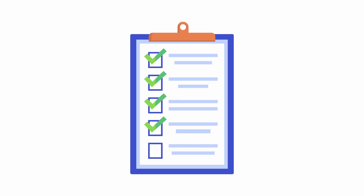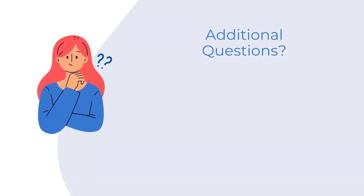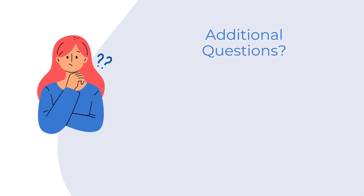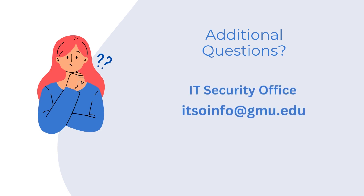Many university applications have already been reviewed and approved to store protected data. If you are unsure about whether an application, service, or system is approved for storing protected data, always seek clarification and request approval when necessary. It's better to be safe and compliant. If you have any questions or need additional information, please contact the IT Risk and Compliance team at itrc.gmu.edu or contact the IT Security Office. They're here to support you and ensure our data remains secure.